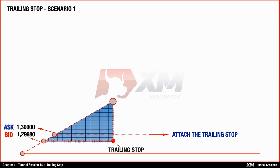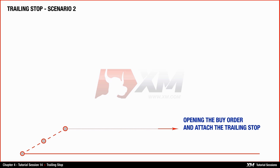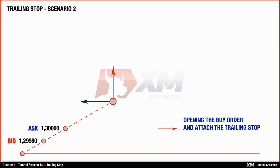Now we will see what happens if you do it otherwise. Supposing you open a buy position of EURUSD and immediately modify this order by using the trailing stop at the minimum distance of 40 points, which is equal to 4 pips. The ask price now will be 1.30000, and the bid price now will be 1.29980. In this case, your trailing stop is at the value of 1.30020. The difference between 1.29980 and 1.30020 is exactly 40 points.